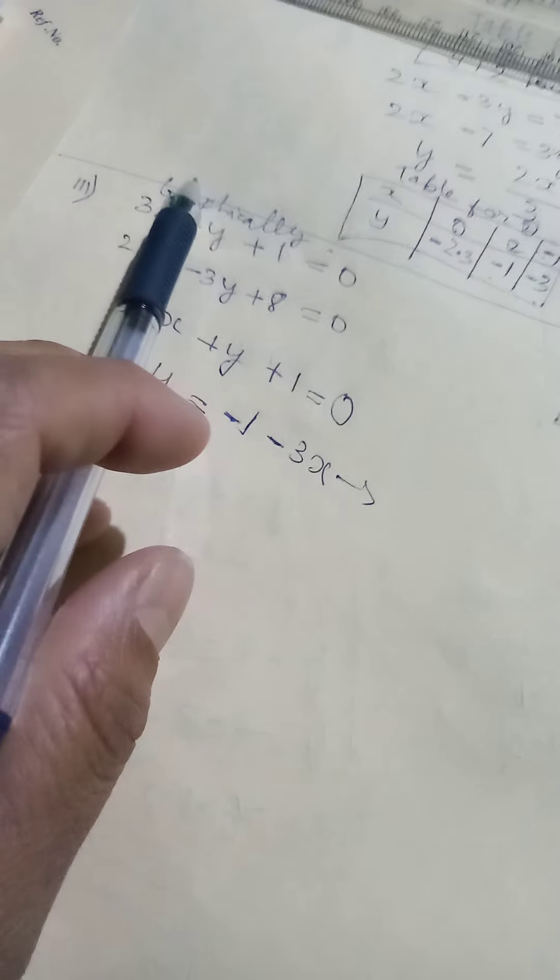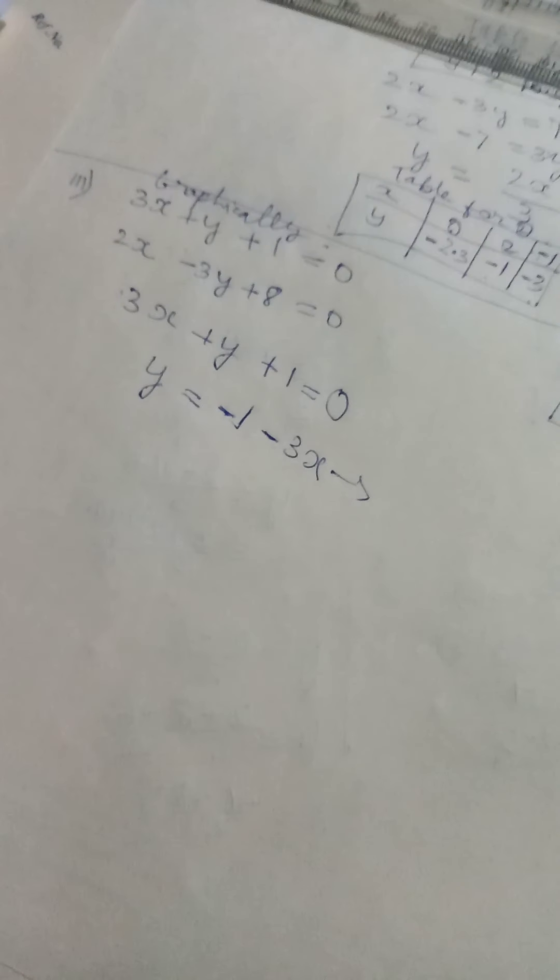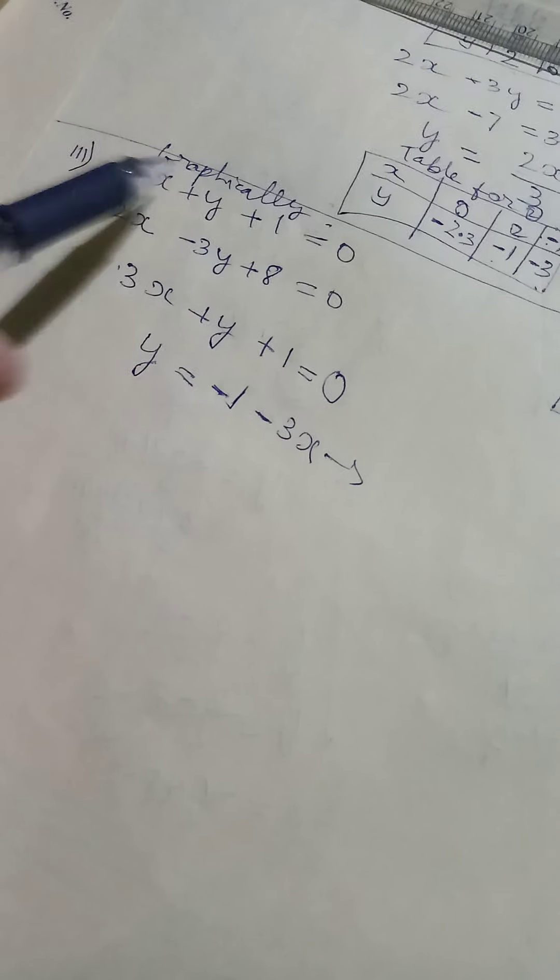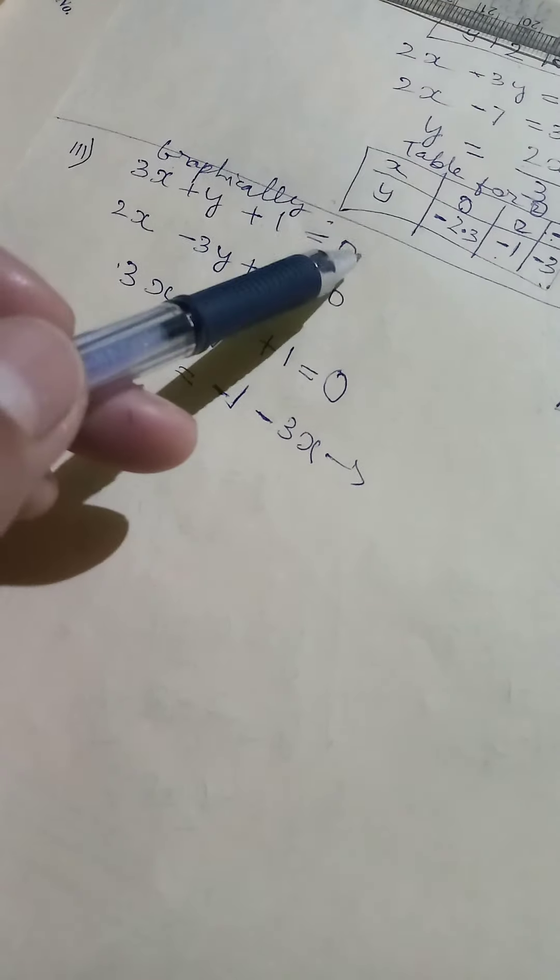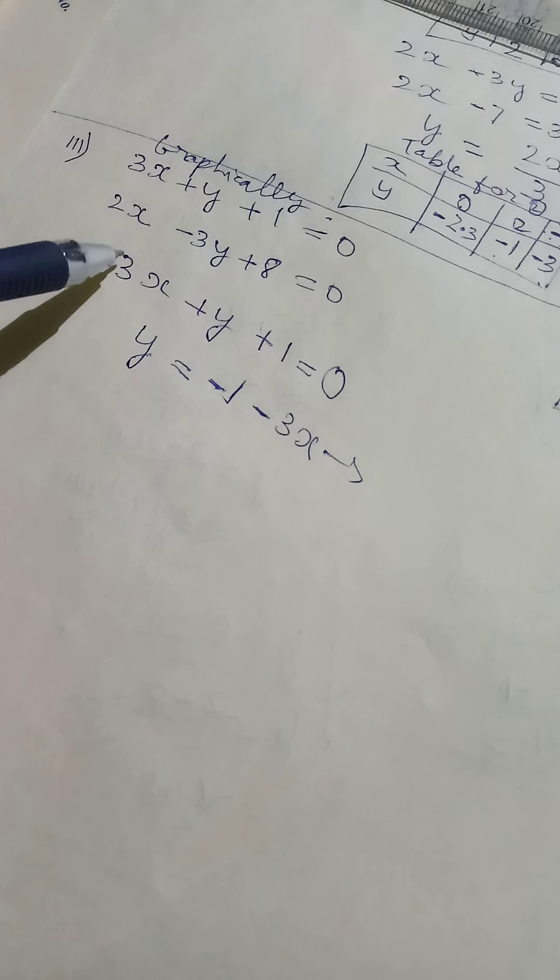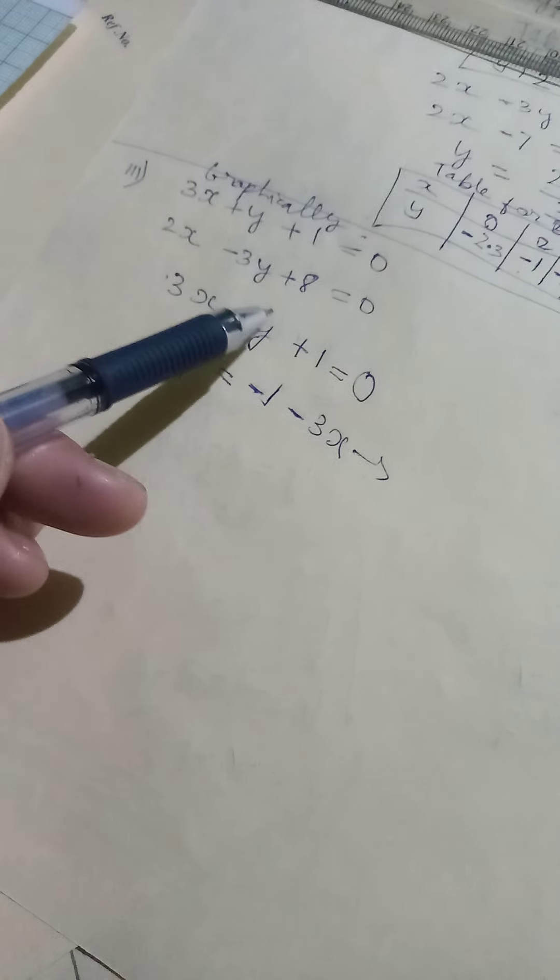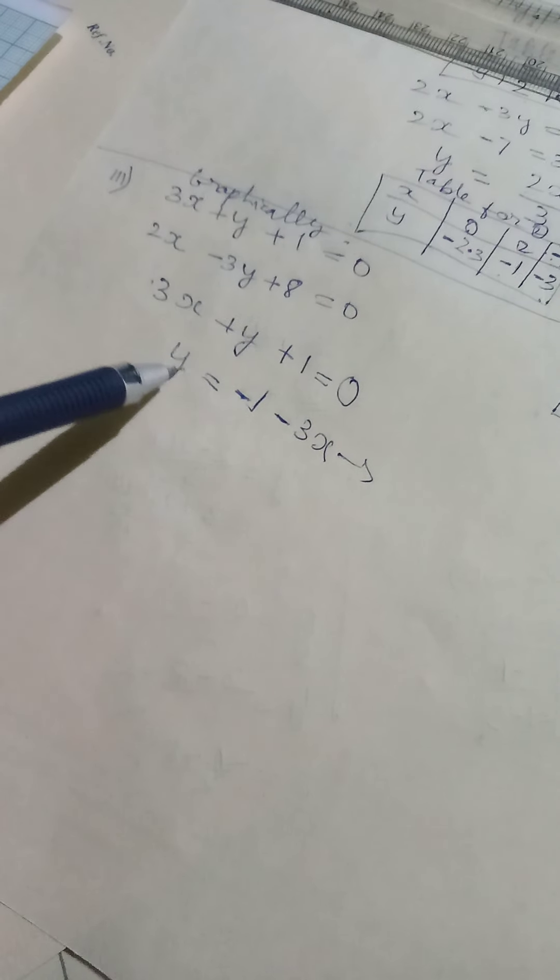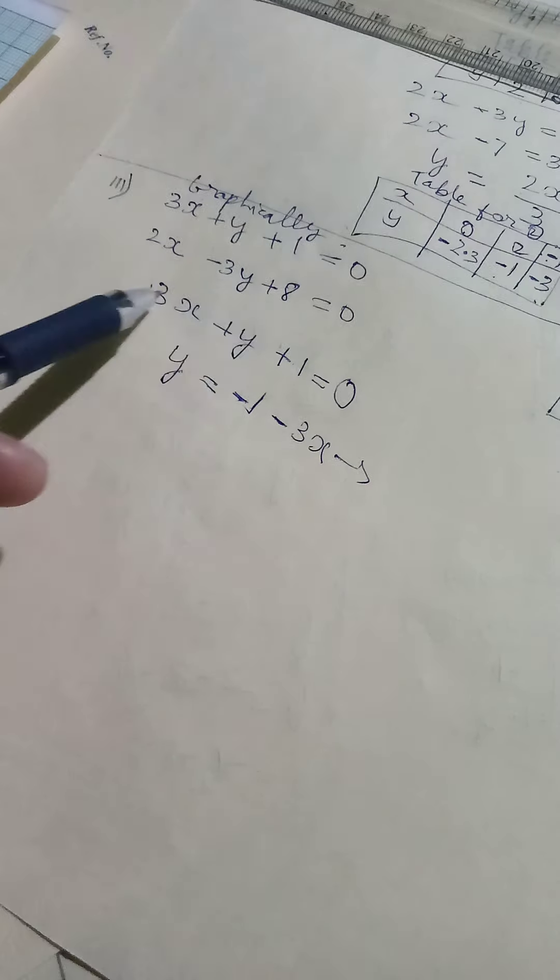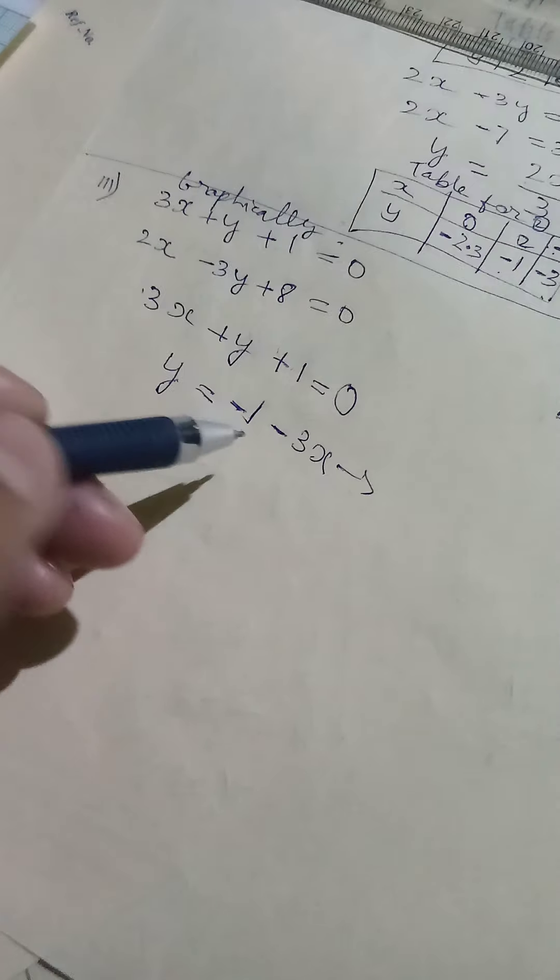Here we have solved graphically, that means we have to find value of X or Y by drawing a graph. So we take equation 1, then we separate X and Y. Depending on your choice, you can choose any one. Since Y is alone, I leave it here, then the other two I can transfer to the other side.